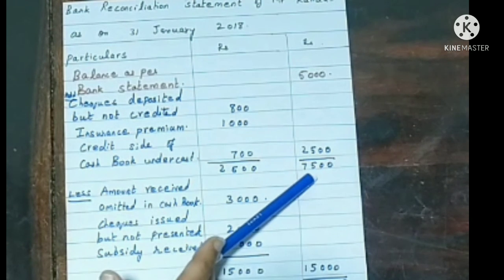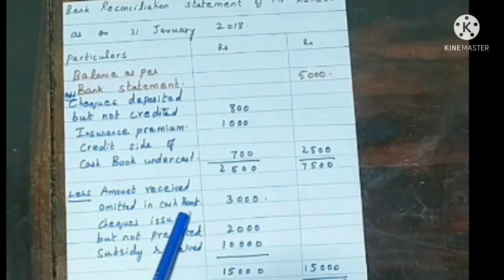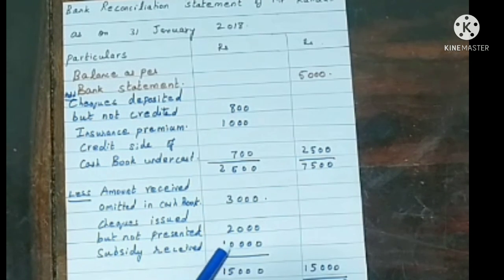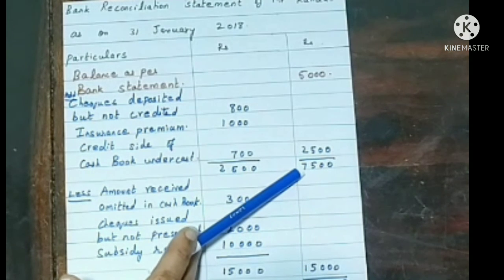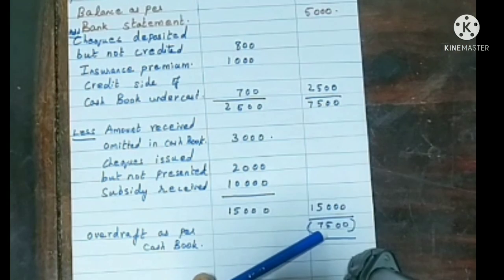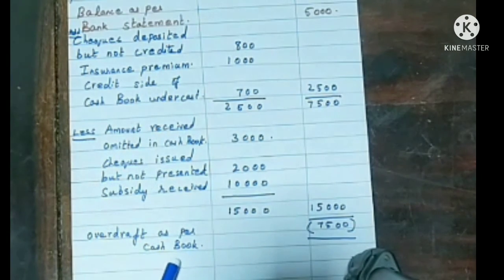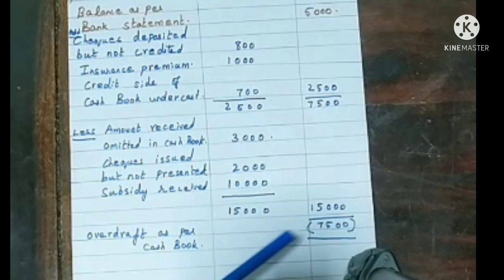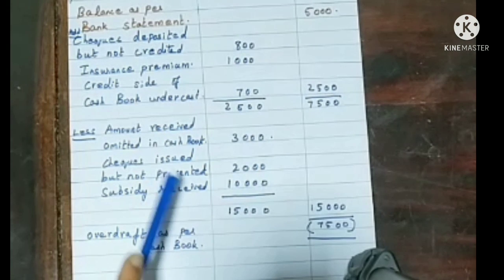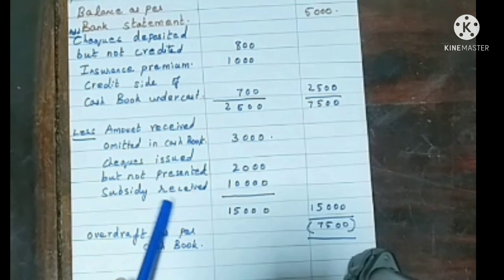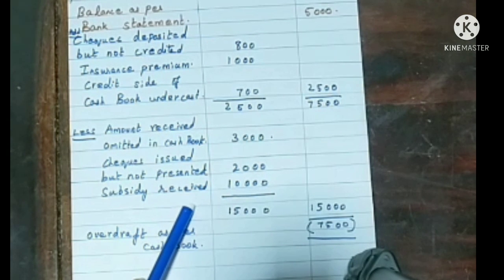Now we deduct: amount received by bank through net banking omitted in cashbook Rs. 3000, checks issued but not presented for payment Rs. 2000, subsidy received Rs. 10,000. Total deductions: 3000 + 2000 + 10,000 = Rs. 15,000. Deducting from 7500, we get an unfavorable balance of Rs. 7500, written as overdraft as per cashbook shown in brackets. Bank reconciliation statement will be well understood only if you also watch the theory part — the introduction to bank reconciliation statement.